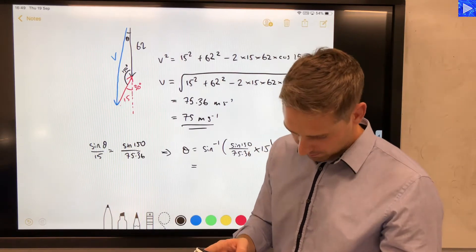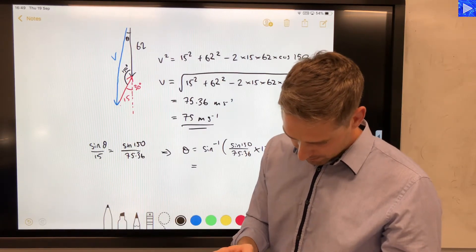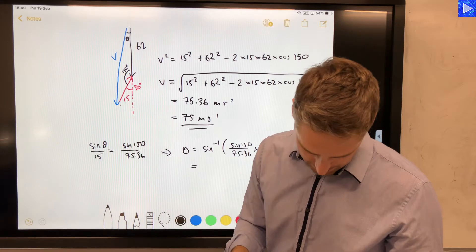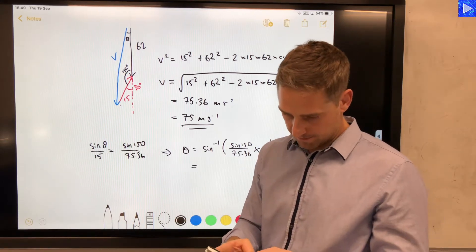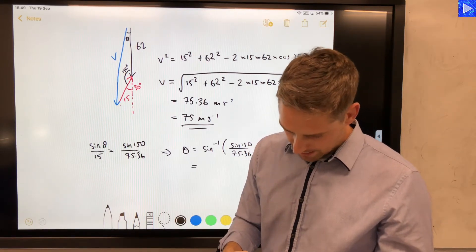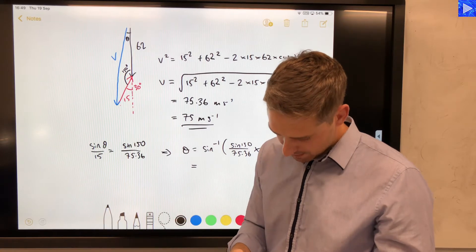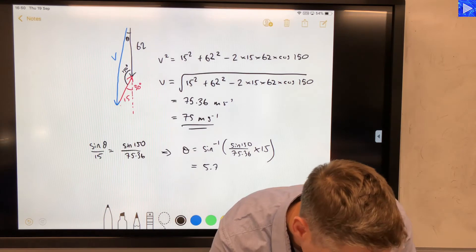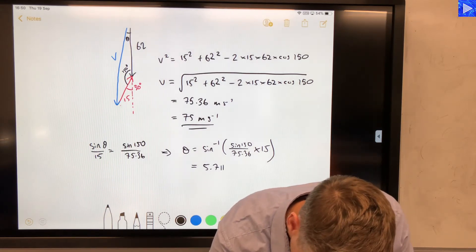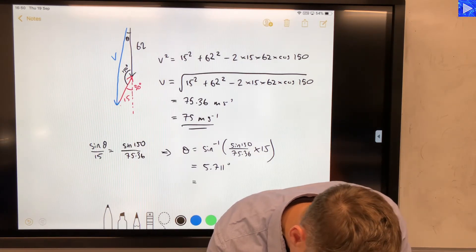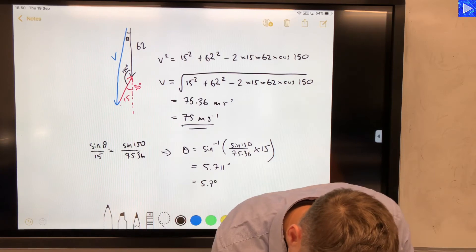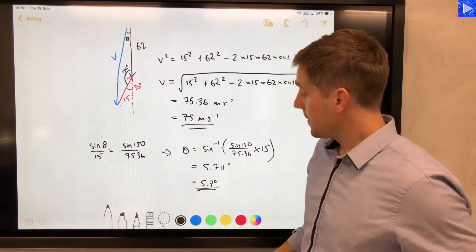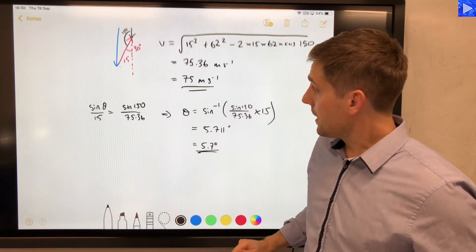So times, times times 15, and then don't forget to inverse sine that answer. And that gives me, hopefully I did that right, 5.711 degrees.